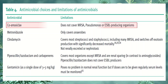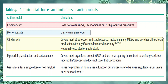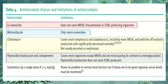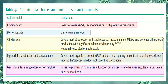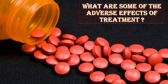The antimicrobial choices and their limitations include: co-amoxiclav, which does not cover MRSA, Pseudomonas, or ESBL-producing organisms; metronidazole, which only covers anaerobes; clindamycin, which covers most streptococci and staphylococci including MRSA and switches off exotoxin production with significantly decreased mortality, and is not nephrotoxic; piperacillin-tazobactam or carbapenem, which cover most organisms except MRSA and are renal-sparing compared to aminoglycosides, though piperacillin-tazobactam does not cover ESBL producers; and gentamicin at 3–5 mg/kg, which poses no problem with normal renal function but requires serum level monitoring if given regularly.